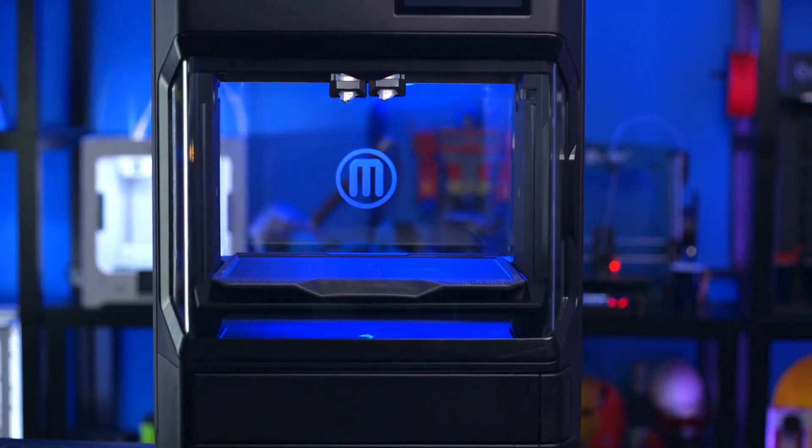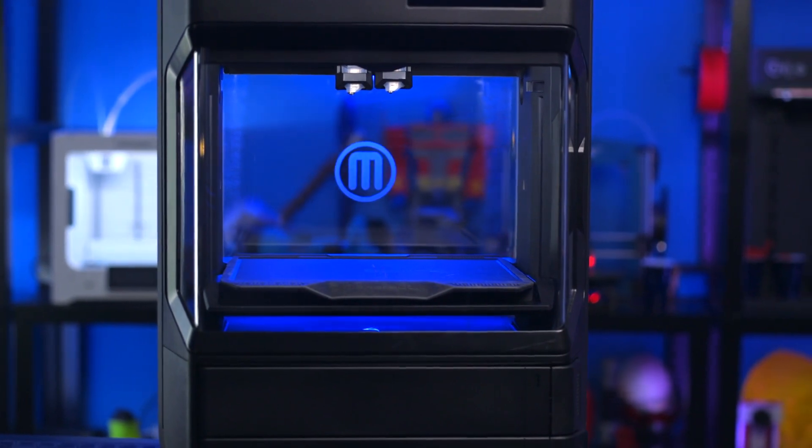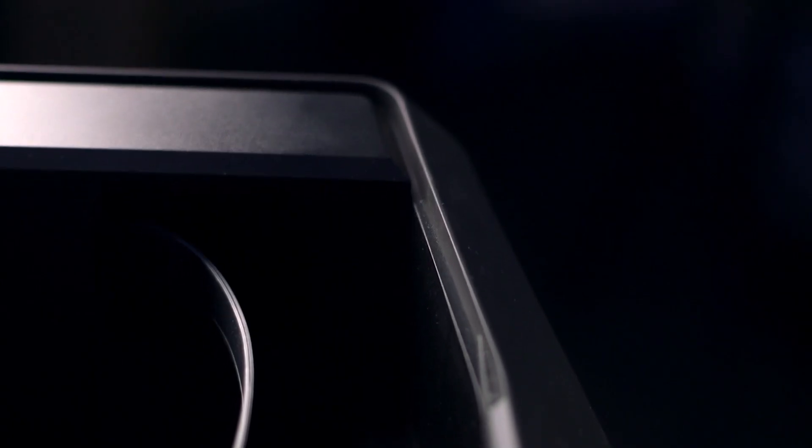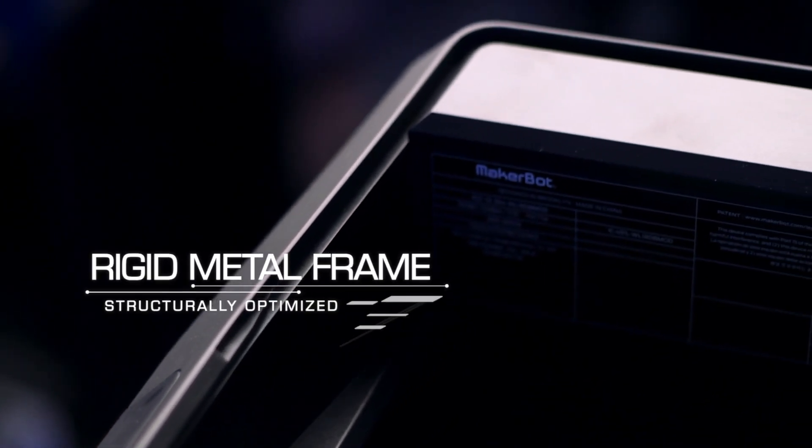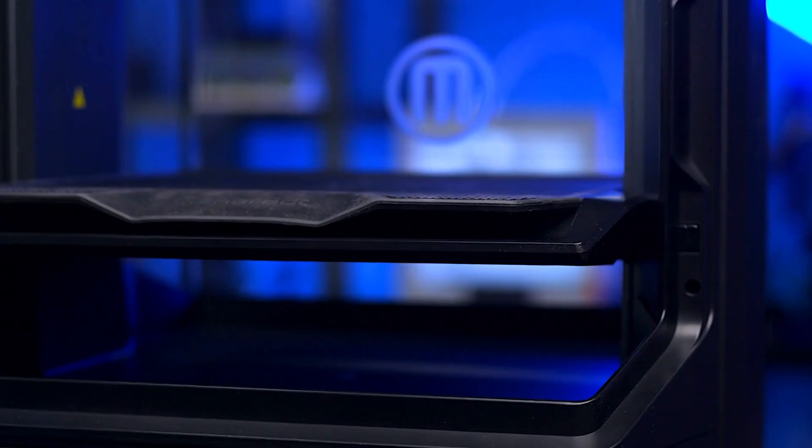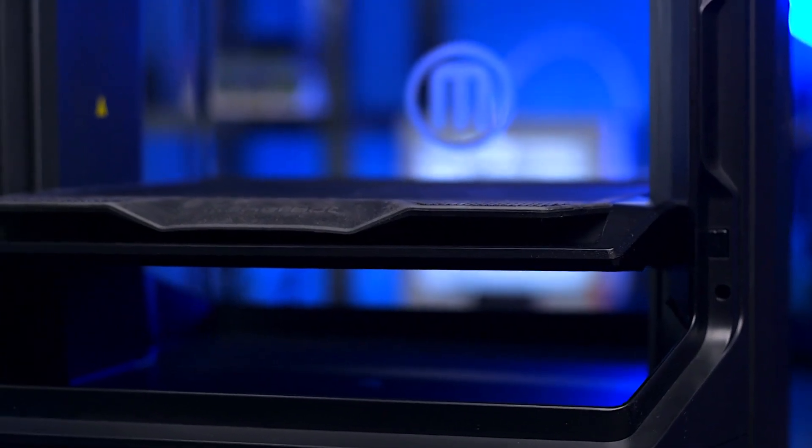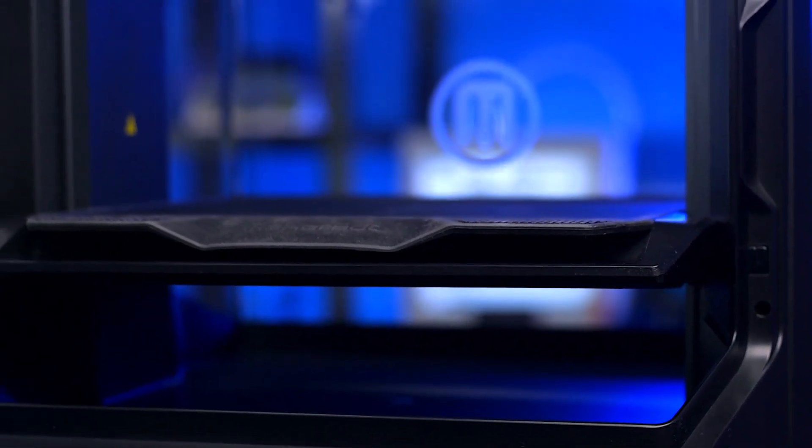The MakerBot method features many components tailored for the ideal 3D printing experience. Underneath the sleek outer shell is a rigorously tested and structurally optimized metal frame. This ultra-rigid frame was designed with the sole purpose of stability in mind. Less flexing means more consistent prints, more accurate parts, and fewer failures overall.